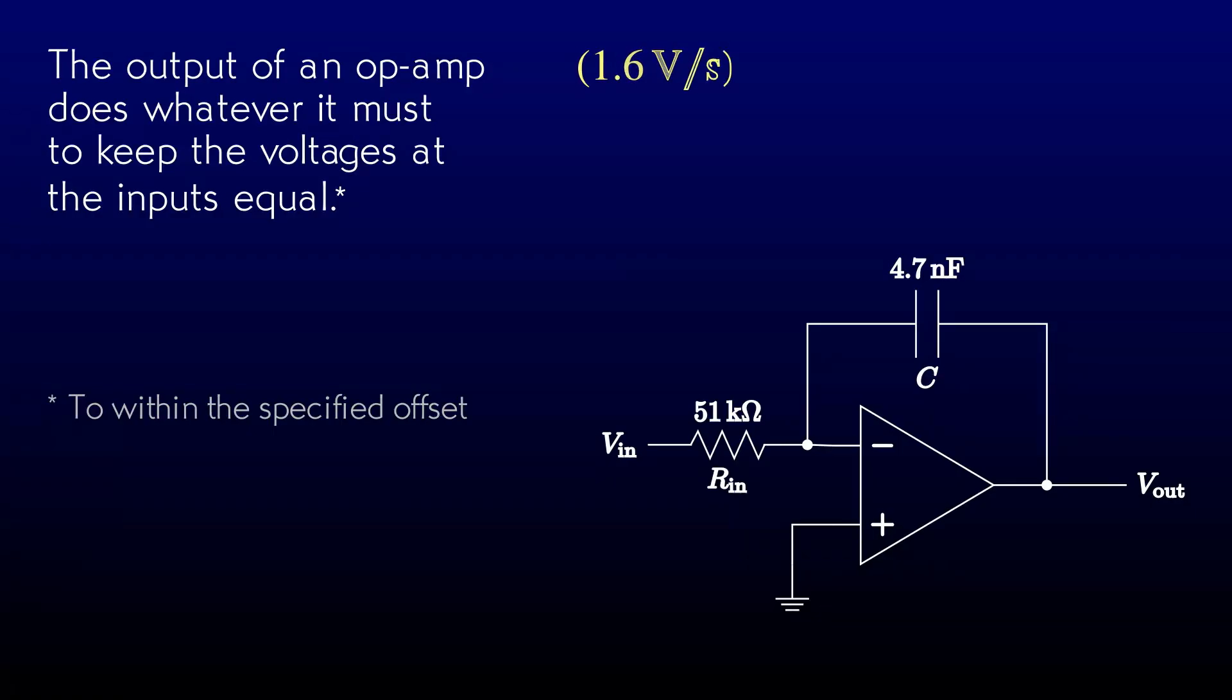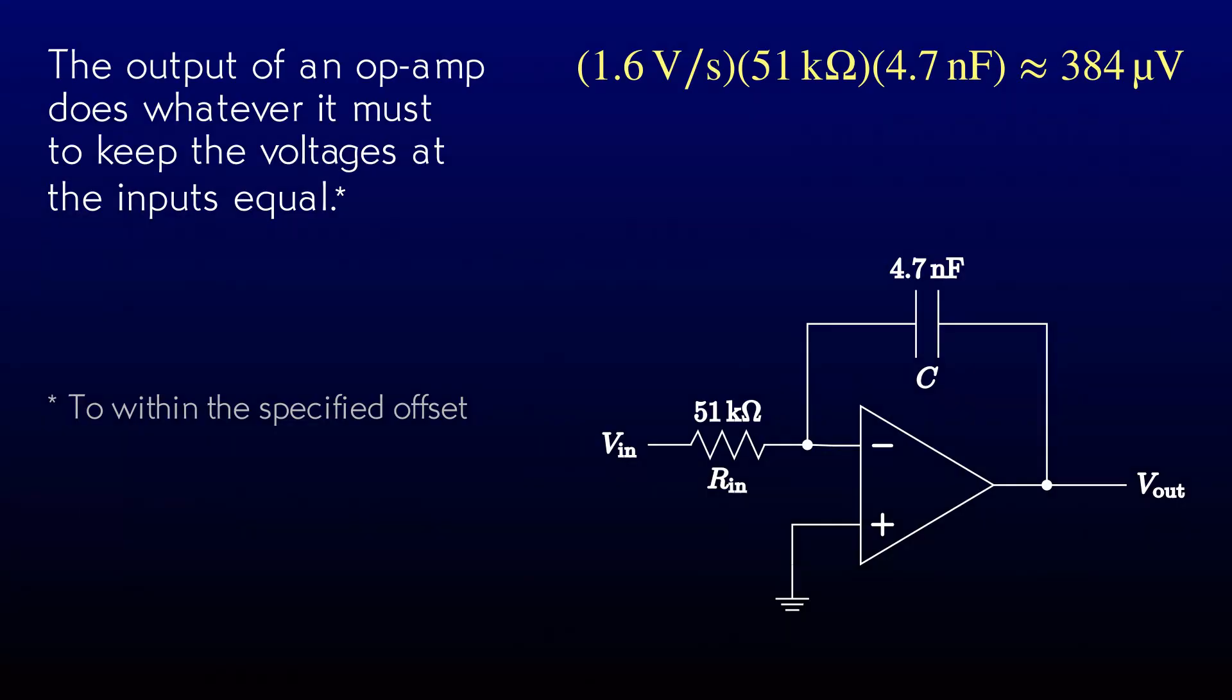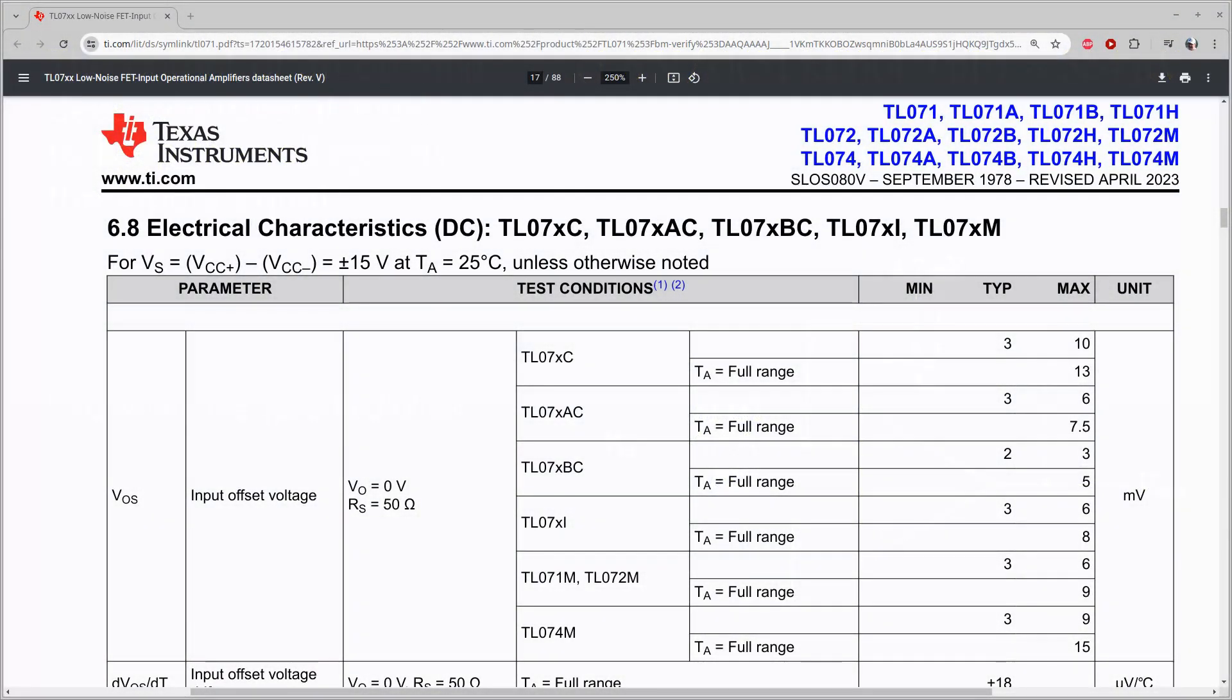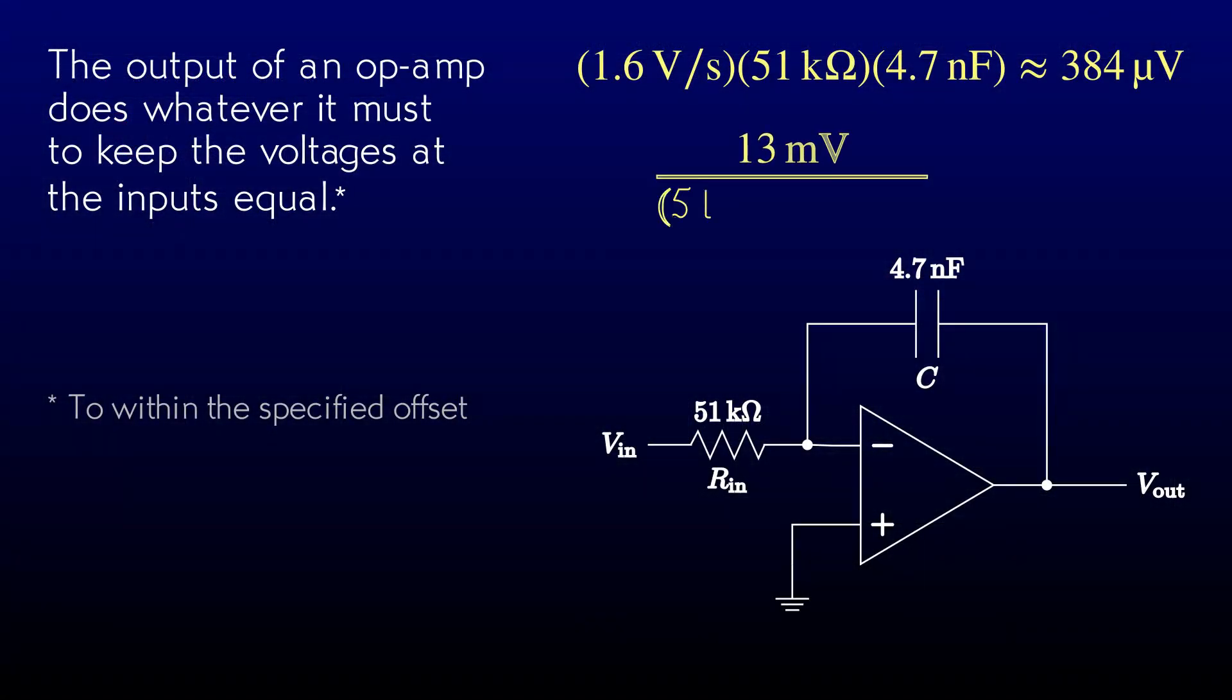If we take the 1.6 volts per second drift rate that we saw and multiply by the RC time constant, we calculate that the offset voltage must have been about 380 microvolts. That's actually better than I expected. If we look at the data sheet for the cheap TL071 op-amp I used, I see that the offset can be as high as 13 millivolts in the worst case. That is not a stellar figure, as might be expected for a cheap part. And that's more than enough to account for the drift that I'm seeing. Lots more. The part would still be in spec if it ran its output voltage to the rails in less than a quarter second. We also have no guarantee that the starting voltage on the capacitor would actually be zero. It could be anything. We have to fix this.